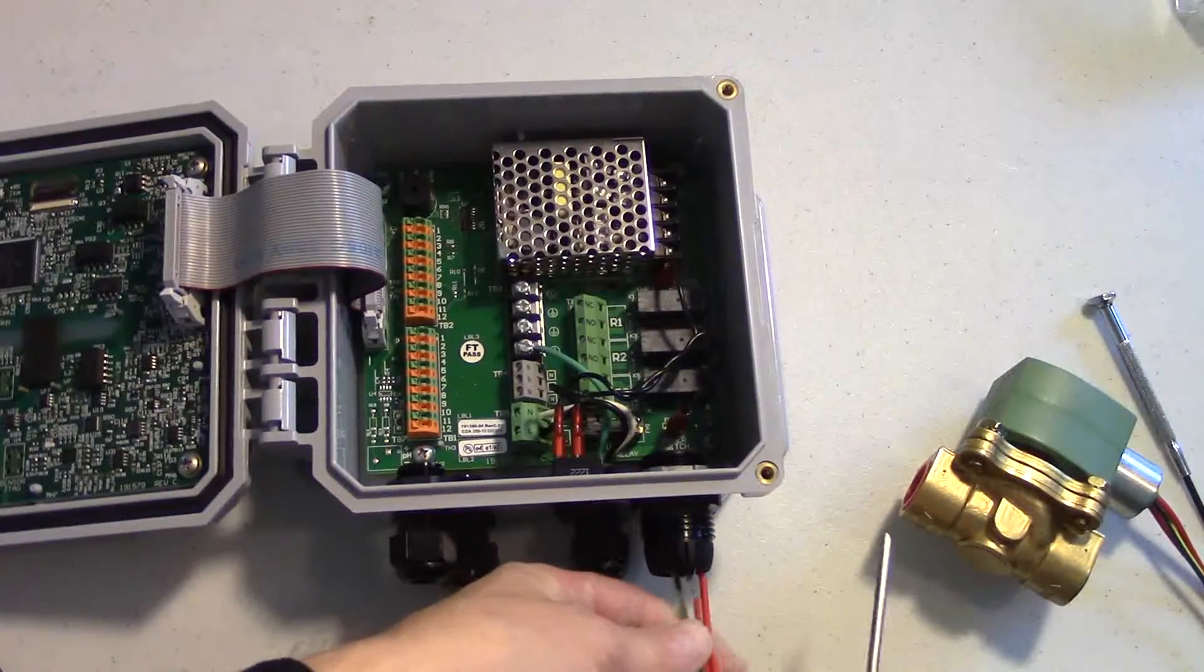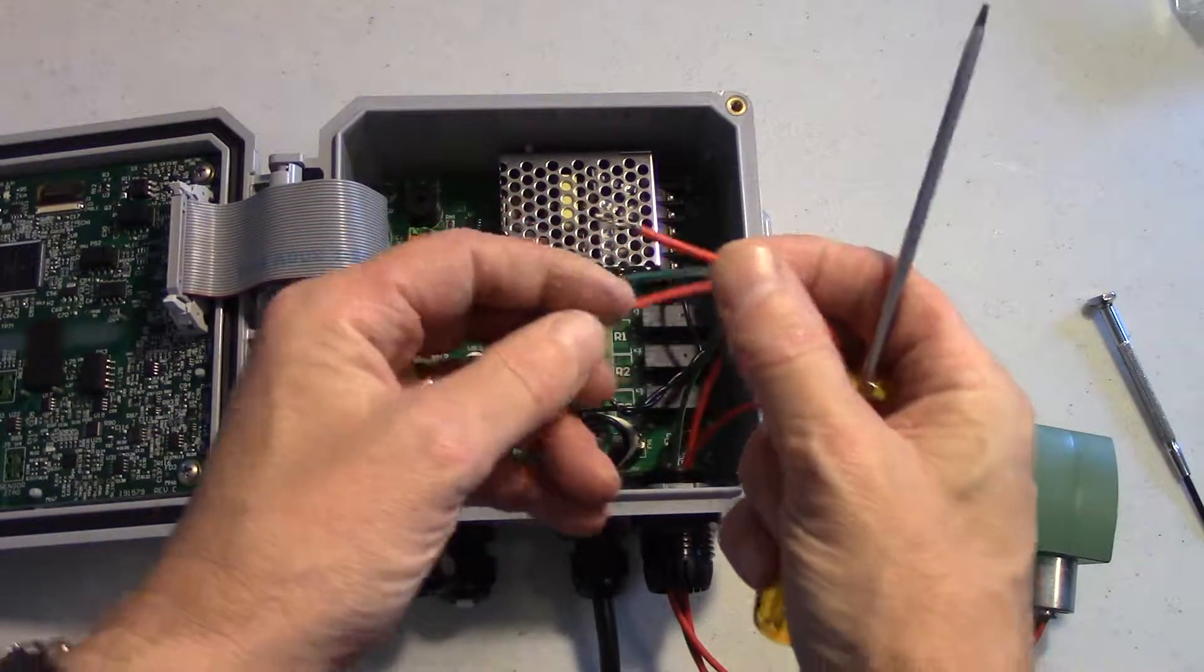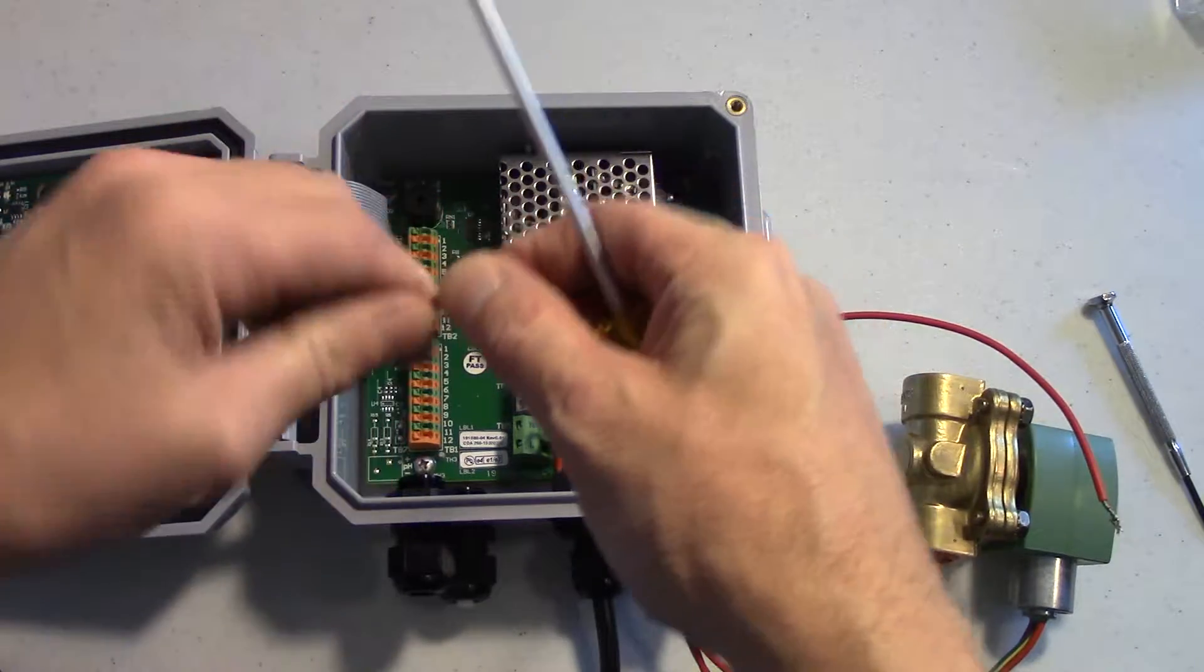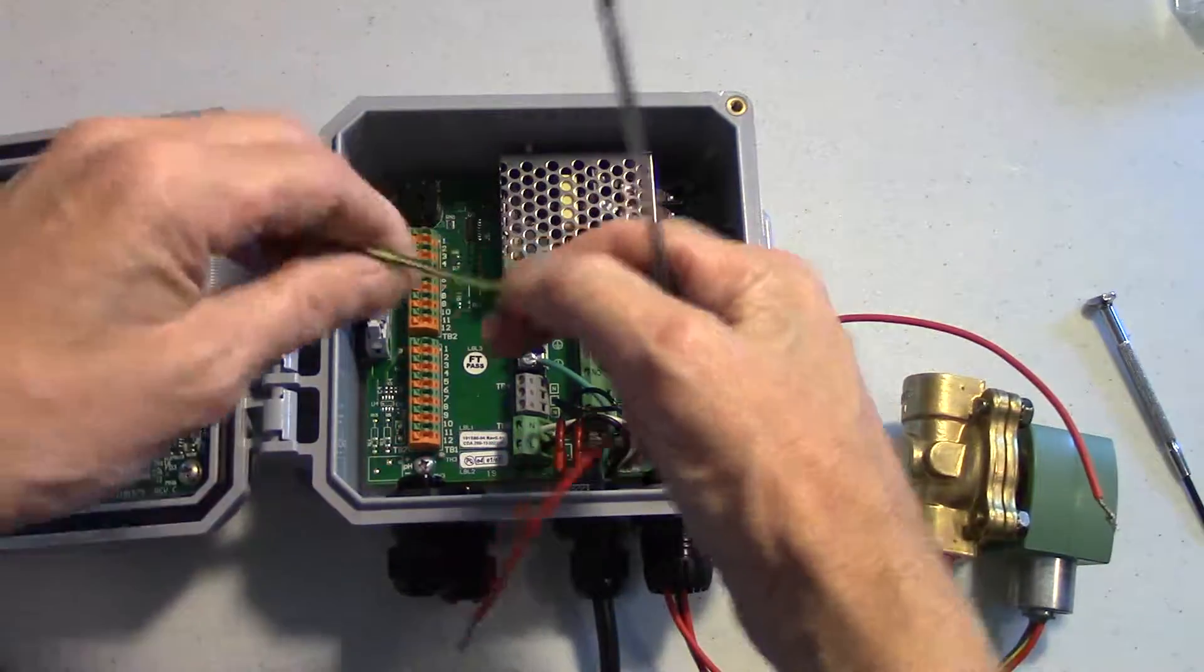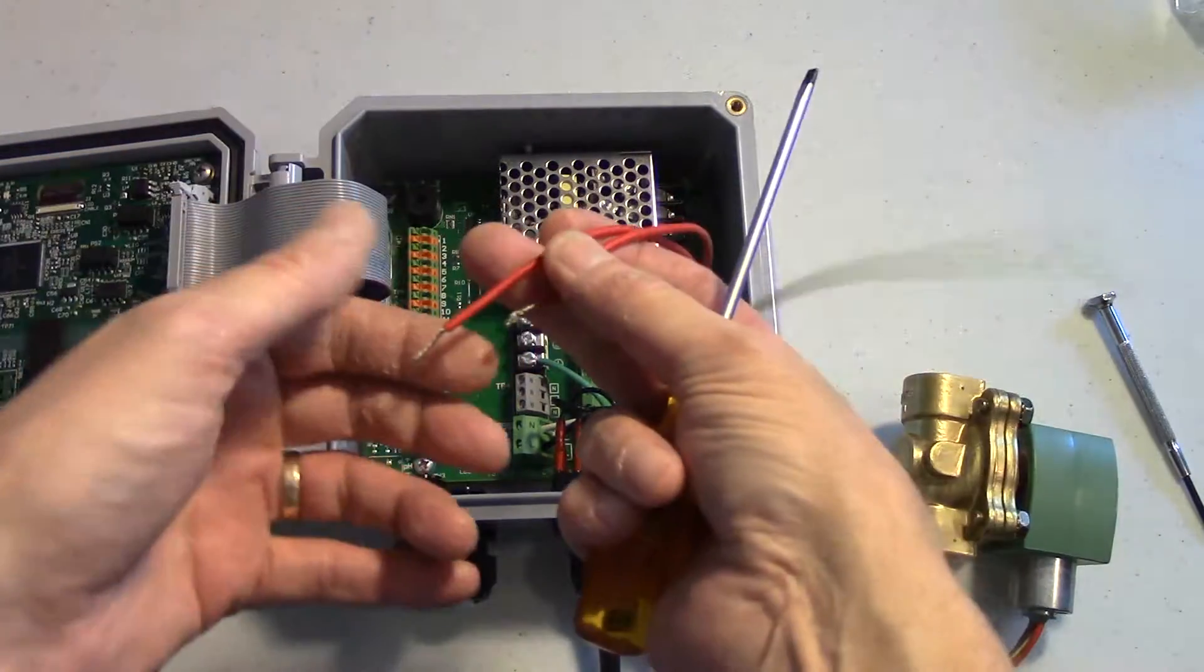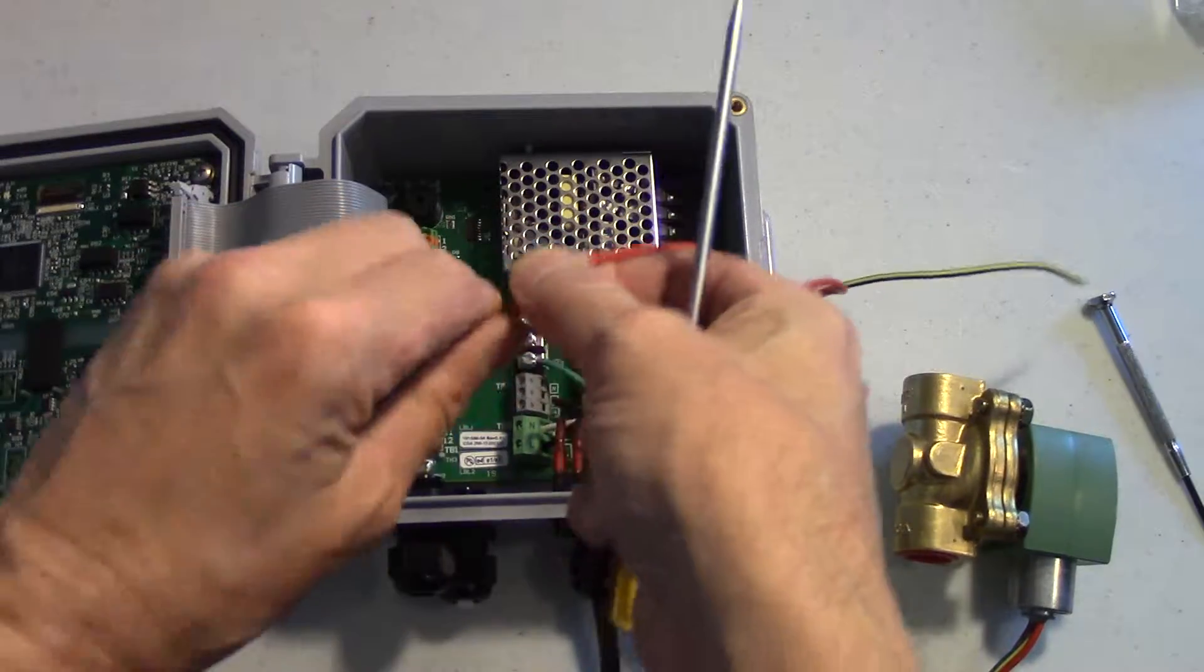You can run the wires from the solenoid valve through one of the connectors in the bottom of the controller and also make sure the ends of the wires are nice and clean. If there's any frayed wires just snip them off to make sure you have really good contacts when you wire them into the terminal strips.